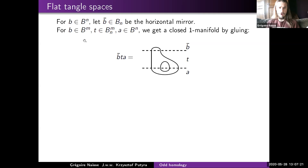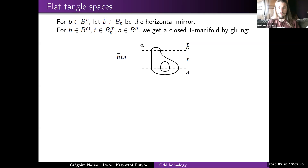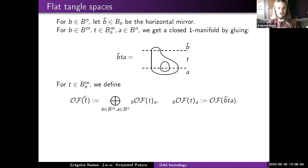When I have a flat tangle, I can flip it horizontally (denoted by a bar above). Moreover, given a crossingless matching, a flat tangle, and another crossingless matching with compatible endpoints, I can glue them together to get a closed one-manifold — a collection of circles. I can then apply my TQFT. So we define the space for a flat tangle t as the direct sum over all ways to close t by crossingless matchings of the space obtained by applying the TQFT on the closed tangle.